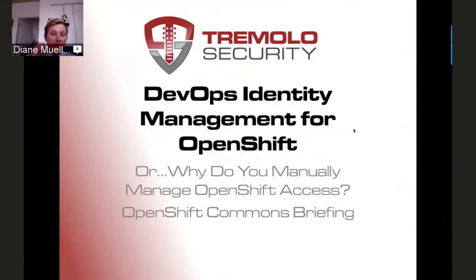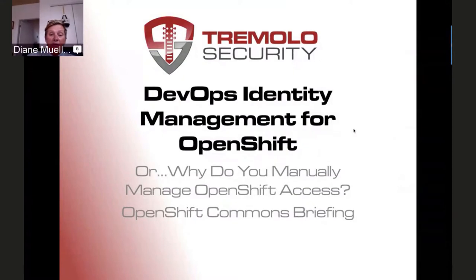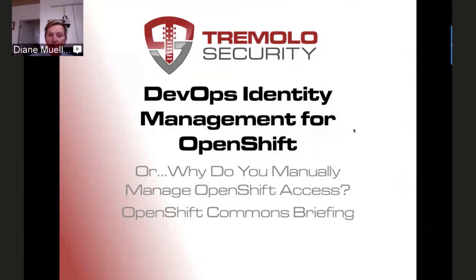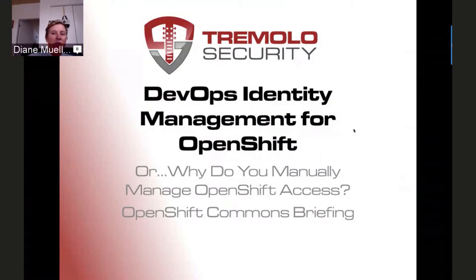Hello everybody, and welcome again to another OpenShift Commons briefing. My good friend Mark from Tremolo Security is going to talk again about identity management, a problem that keeps popping up in the cloud native space. They've done some wonderful open source projects that help with this. We've done one previously — you can look up OpenUnison. I'm going to let Mark introduce the topic, and we're going to do Q&A in the chat, then open it up for live Q&A at the end.